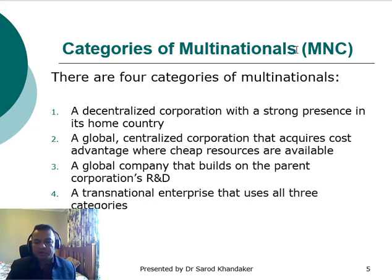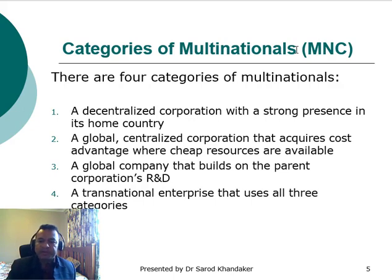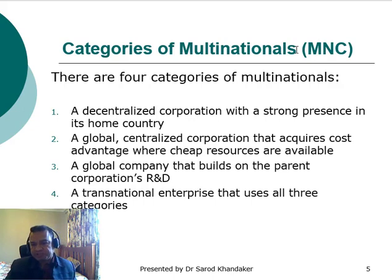The third category is a global company that builds on a parent corporation's R&D. For example, General Motors, or GM, is located in the USA but has subsidiaries across the globe, such as Holden Australia. The cars Holden produces are also sold in European countries under different names as GM company cars. Number four is the Transnational Enterprise, which uses all three of the previous categories.